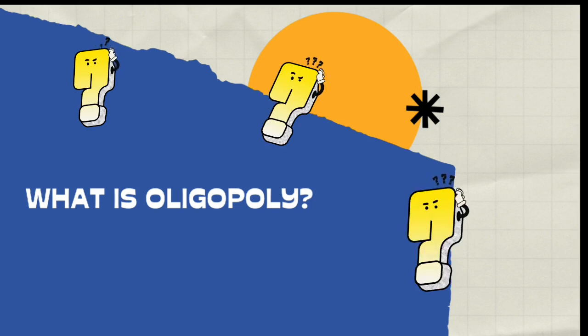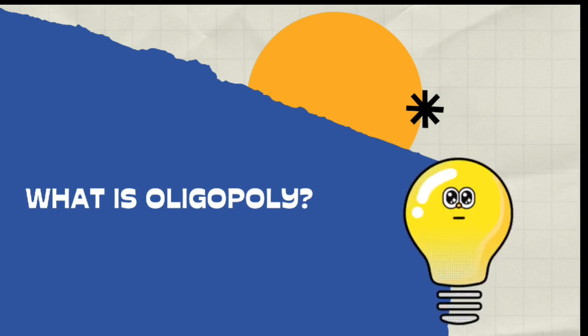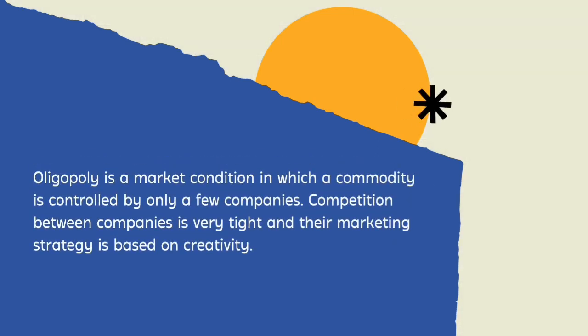Maybe you've heard it before, so without further ado let's find out together. An oligopoly market is a type of market where there are fewer producers or sellers with relatively many buyers. Therefore, this market is also called a market with imperfect competition. The numbers of producers and consumers who are not balanced can affect the market price.